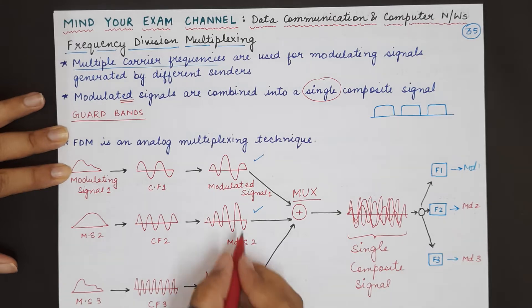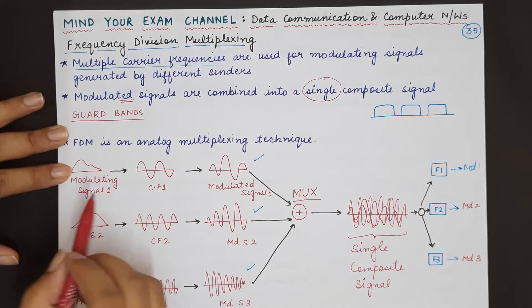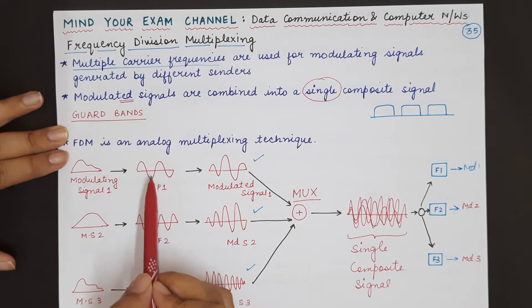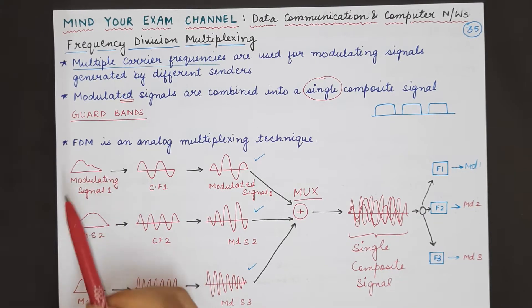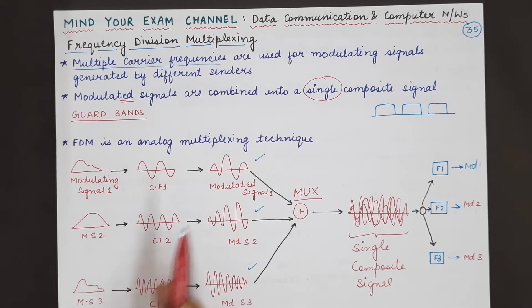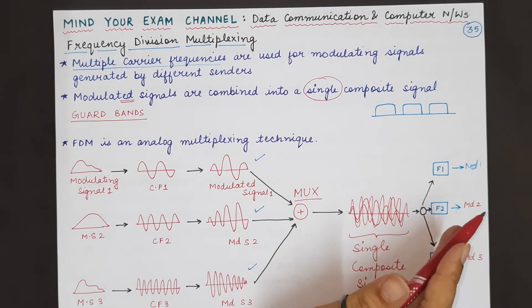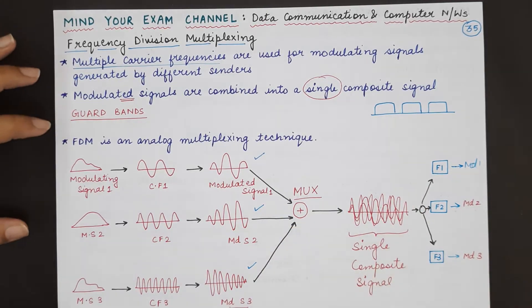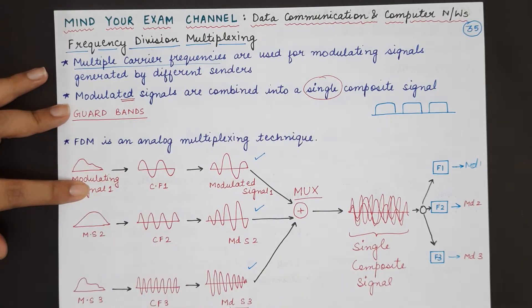Each of these modulated signals will then be sent further to the demultiplexer so that the carrier frequency can be separated from the original signal, and that is when you will get the original signal back. So the three original signals will be obtained finally and sent to their respective receiving devices. Two remaining points you need to understand in frequency division multiplexing: frequency division multiplexing is an analog multiplexing technique.